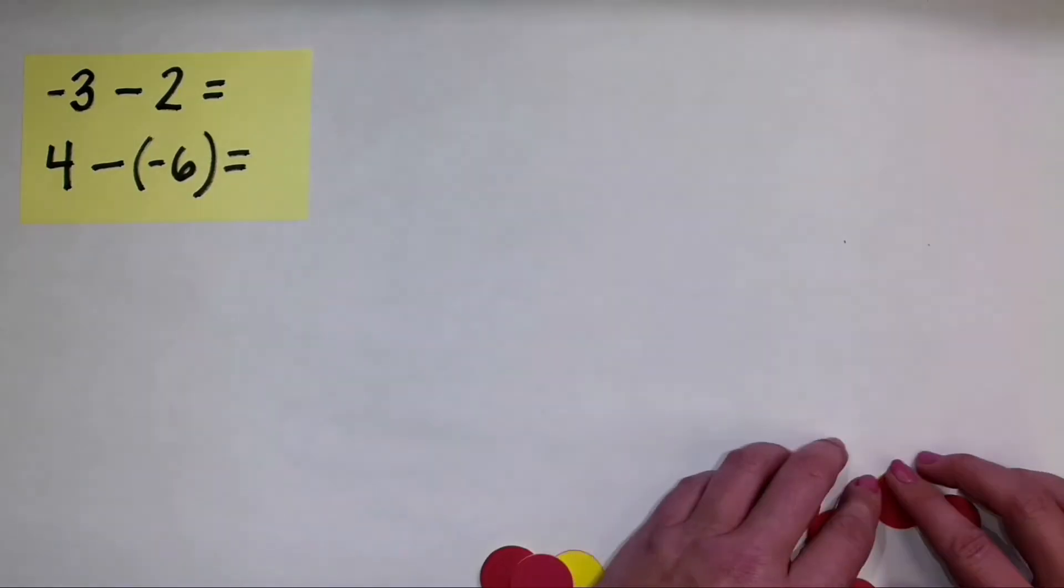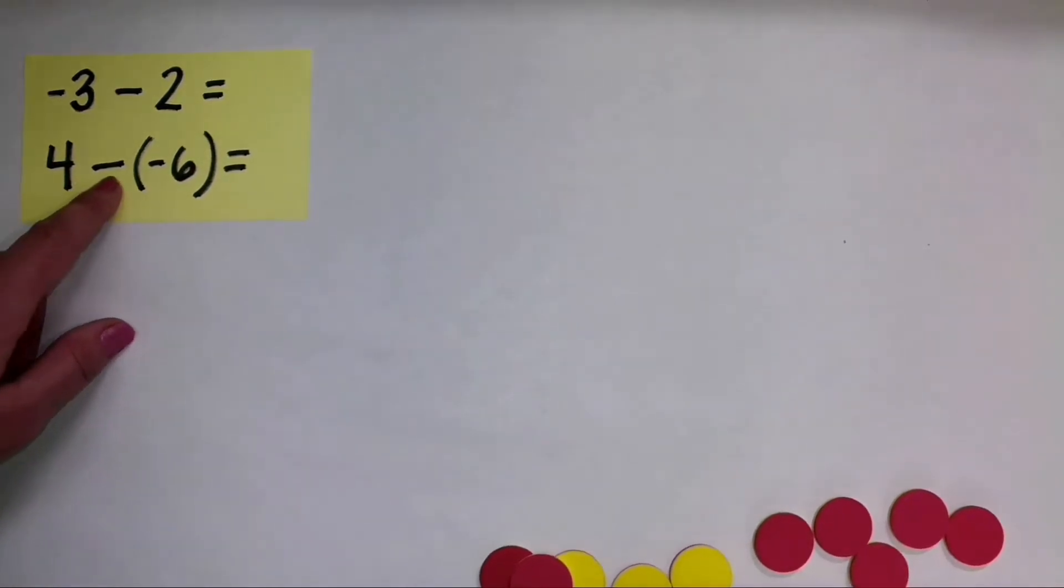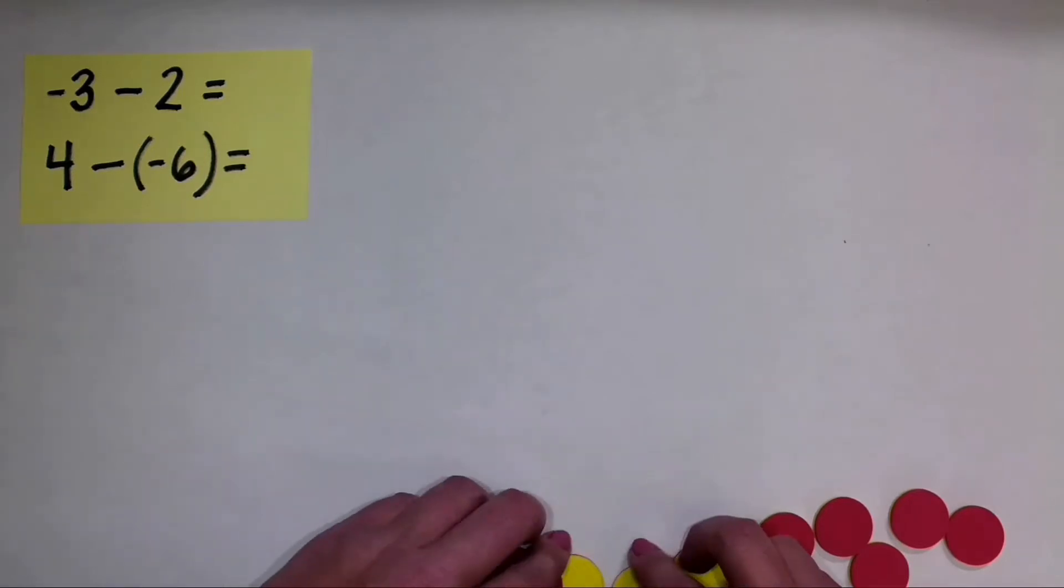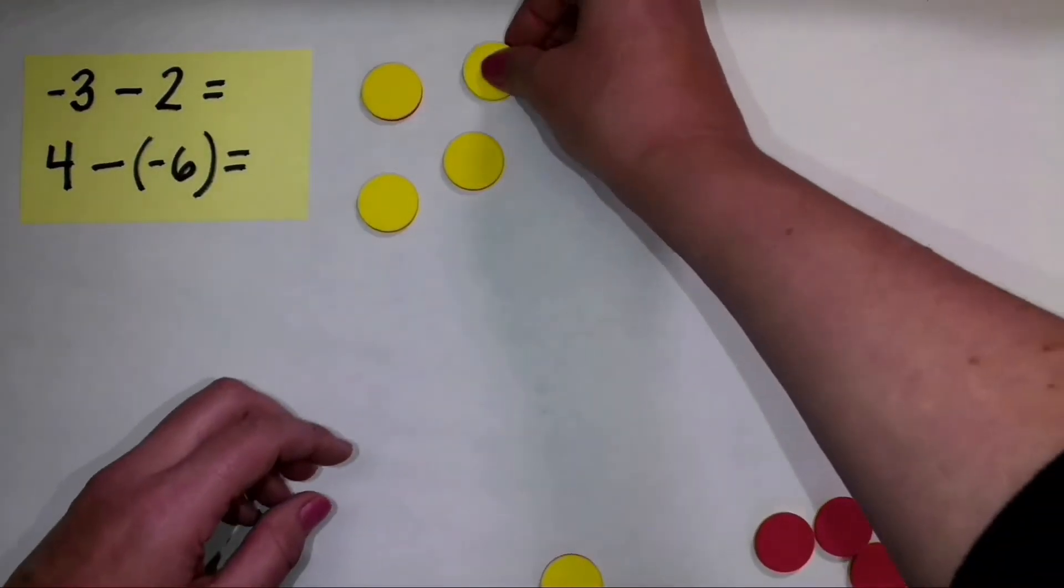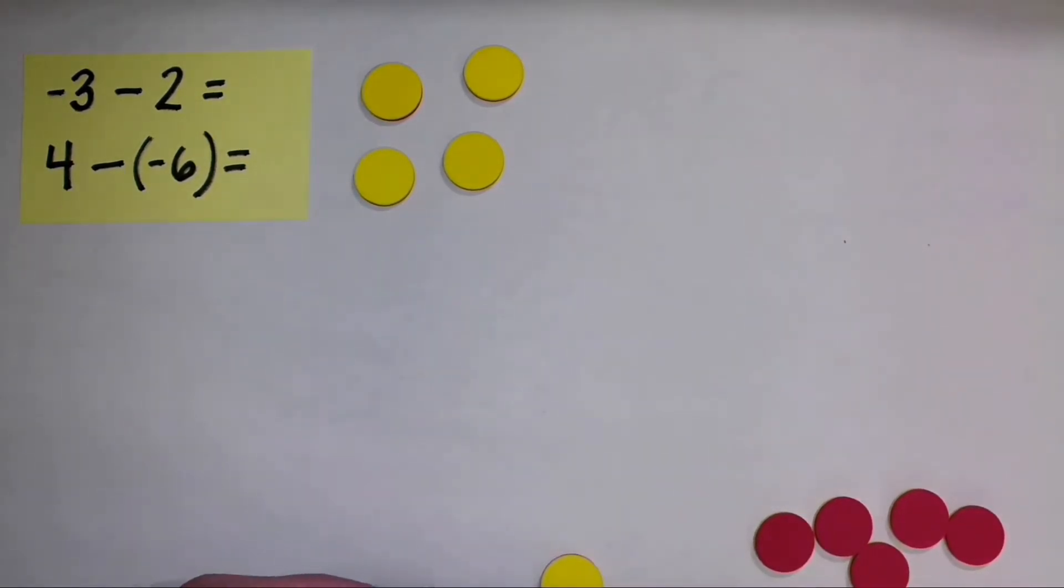Now let's look at this next problem here. Four minus negative six. I start with four. And this four is positive because there is no negative symbol in front of the number four. So I'll just put out four positive counters just like that.